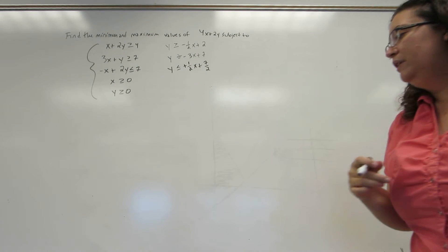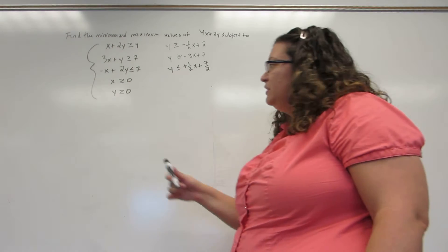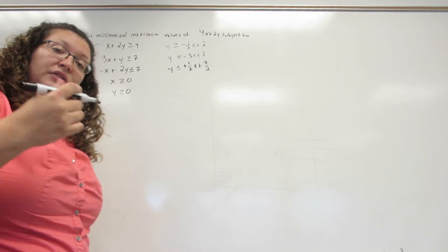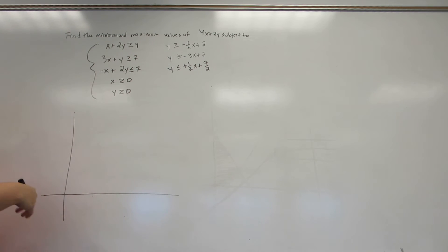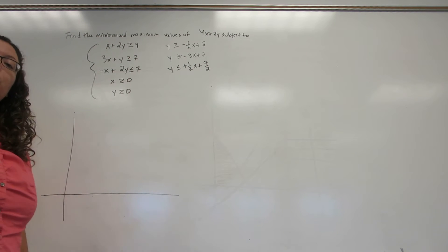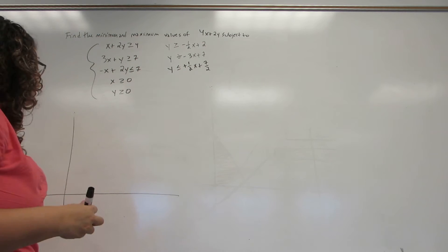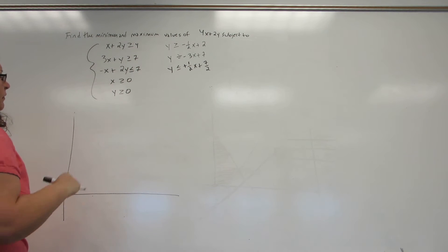That will enable me to graph them. Once again, I have X and Y are greater than or equal to 0. This is actually very typical. They're called non-negativity conditions because these are highly applicable problems, and in most of the real-world problems you cannot have negative values. So I'm only looking at the first quadrant and I'm going to start graphing my inequalities.